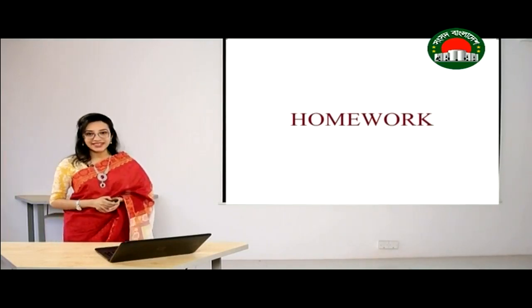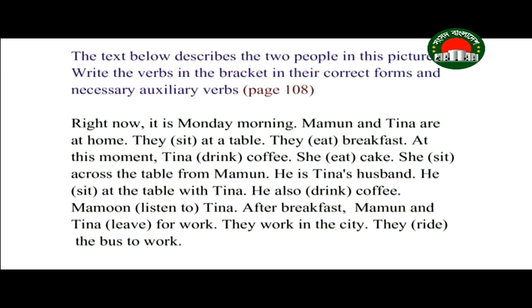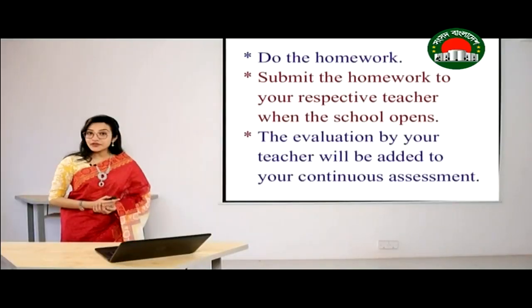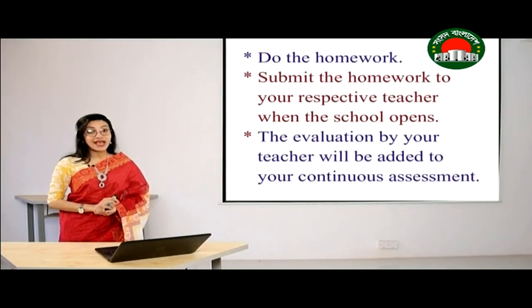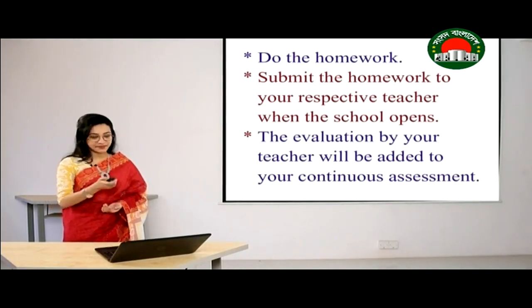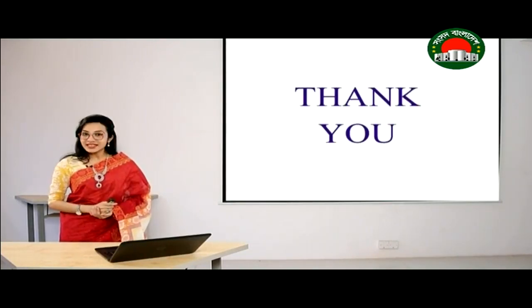Now it's time for homework. I'm showing you a text from your prescribed book at page number 108. You have to read the text where two people are described in the picture. You have to write the verb in the bracket in the correct form with necessary auxiliary verbs. Do not forget to do your assignment and submit it to your respective teacher after school reopens. The evaluation given by your teacher will be added to your continuous assessment. If you want to watch this class again, go to our Facebook page, Amar Ghore Amar School.